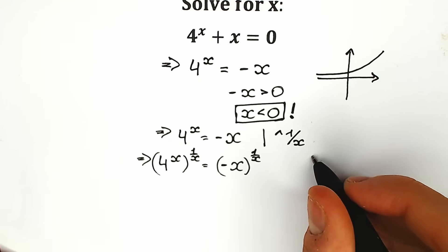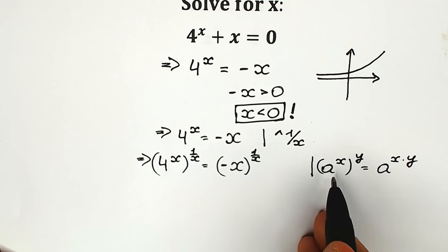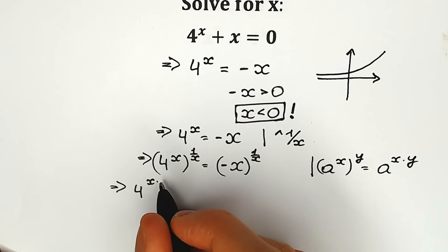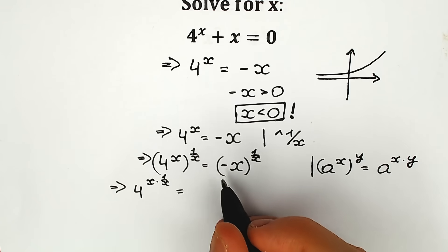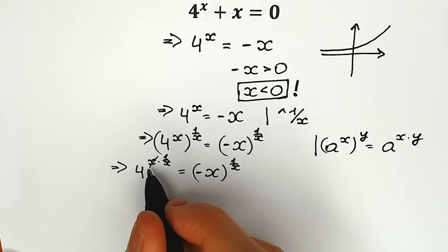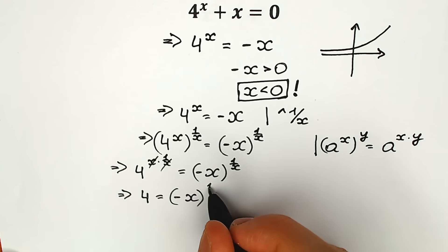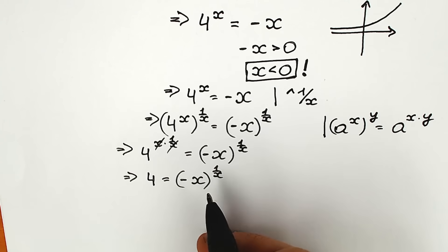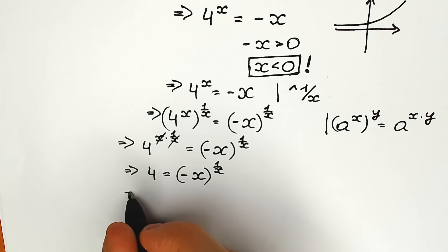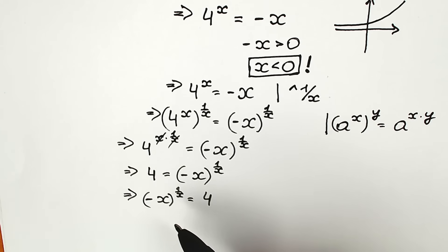Remember that when we have a to the power x, raised to the power y, we can multiply the exponents: a to the power x times y. Applying this on the left side, we get 4 to the power x times 1 over x, which equals 1, so the left side simplifies to just 4. Thus we have 4 equals minus x to the power 1 over x. Rearranging, we write minus x to the power 1 over x equals 4.